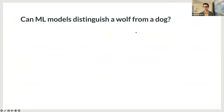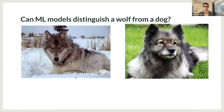Let's start off rather unconventionally with a question for the audience. What I'd like you all to do after I explain the question is to quickly hop into the Zoom chat with a yes or no answer. The question is this: Can machine learning models distinguish a wolf from a dog? Given enough images of wolves like the one on the left, and dogs like the one on the right, do you think a state-of-the-art machine learning model would be able to distinguish between these two species?